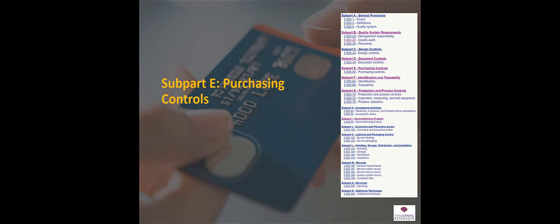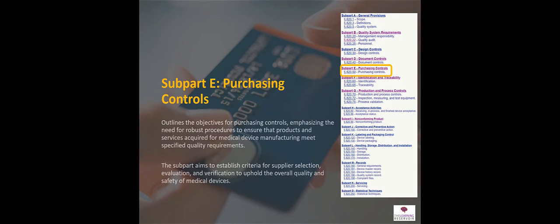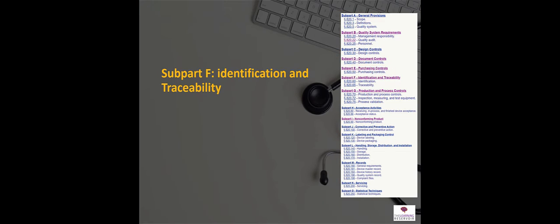Sub-part E covers purchasing controls. When you are manufacturing a medical device, you are going to be buying in components and they have to be of high quality — that's so important. Are you choosing the correct suppliers for your components, who are manufacturing them, and so on? This is all covered under sub-part E, purchasing controls.